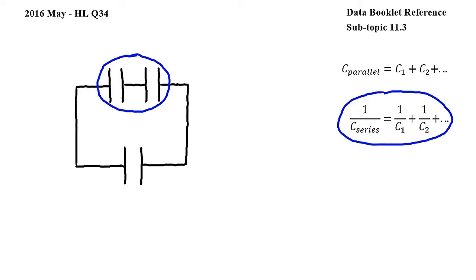In this equation, C_series is the combined capacitance, C1, C2 and so on are the individual capacitances of the capacitors. So substituting into this equation we get 1 over C_series equals 1 over C plus 1 over C since the capacitance of the capacitors is given to be C in the question.